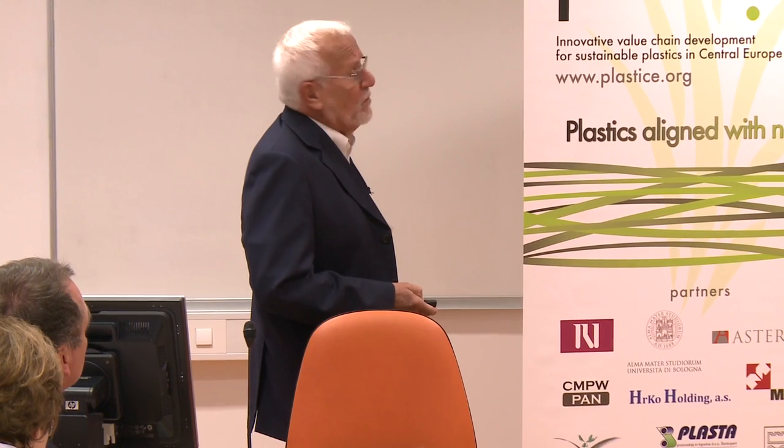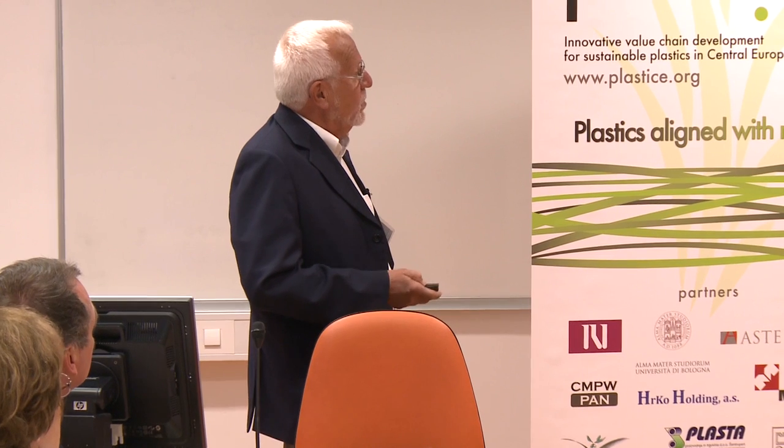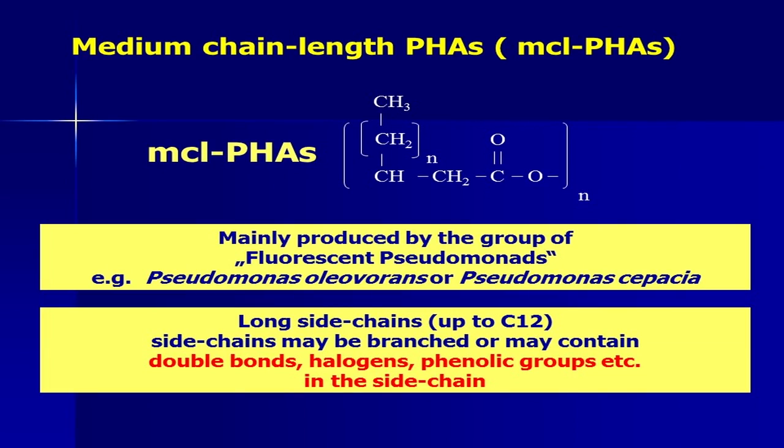There is another group of PHAs — the medium chain length PHAs — which differ because they have quite long side chains. They are produced by fluorescent pseudomonads like P. oleovorans or P. putida, and can have up to 12 carbons in the side chain. The side chain can be branched or linear, and can also contain double bonds, halogens, phenolic groups, and so on, making these substances quite interesting.